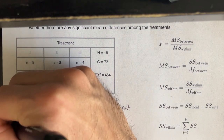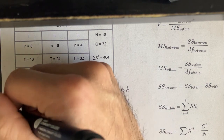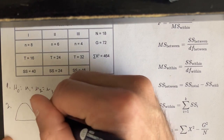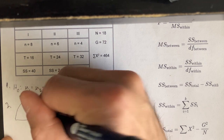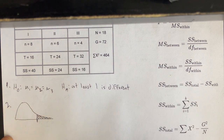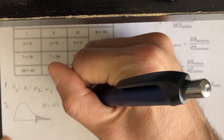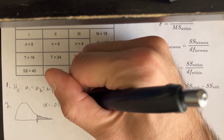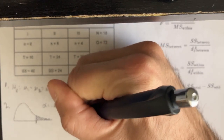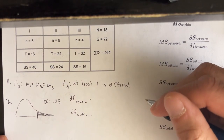The next step is to draw a little sketch to give yourself a visual. The F-distribution looks like a right-tailed distribution. We need to figure out the cutoff value where the rejection region starts, which requires the alpha level of 0.05 and the degrees of freedom between and within to look up the critical value.